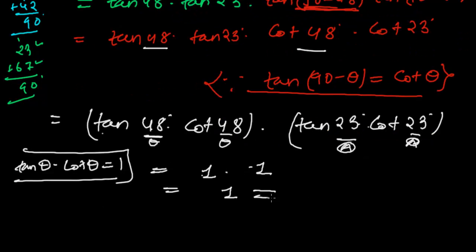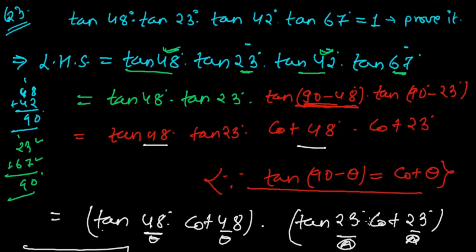So 1 times 1 equals 1, and this equals the right-hand side. Like this we have proved the problem: tan 48° times tan 23° times tan 42° times tan 67° equals 1. We've proved that the left-hand side equals the right-hand side.